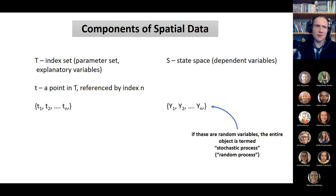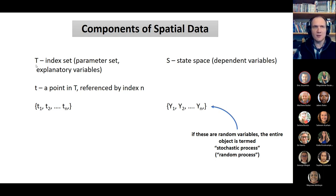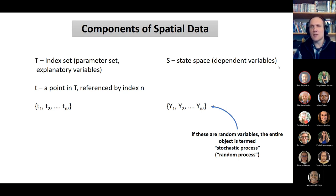This is a little formal introduction, but basically there are two components to spatial data. There is a set which, for some reason, is called T. Let's call it large T — this is an index set and we can imagine it as our set of explanatory variables. On the other side, we have something called state space — these are the dependent variables.